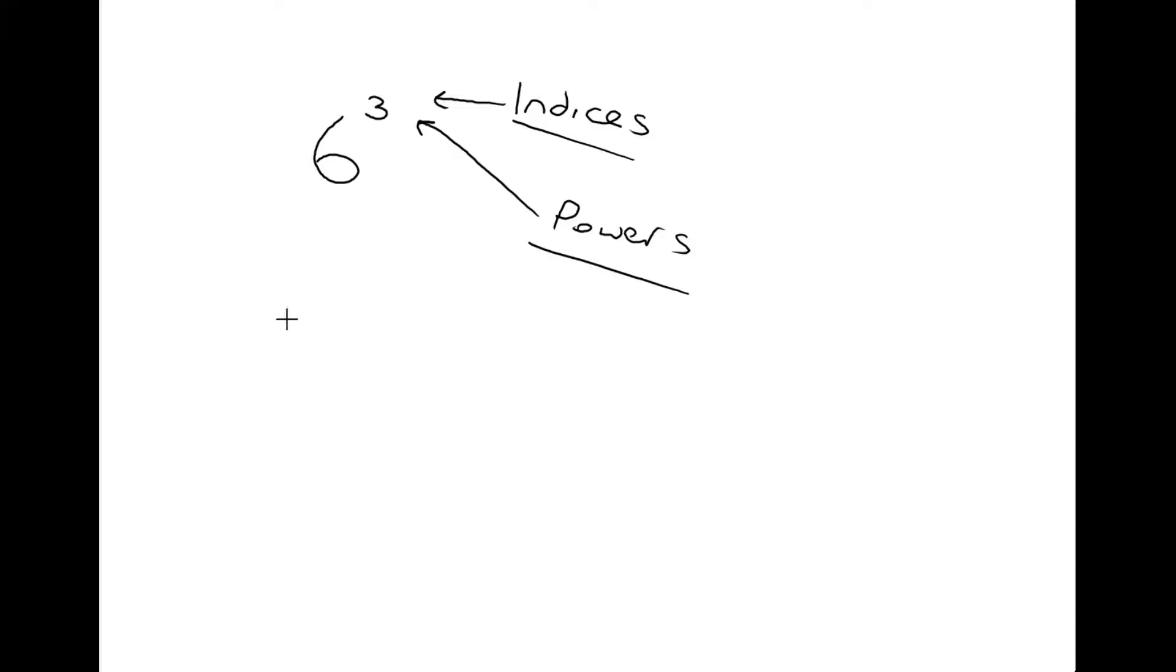What that three is telling us is that we take the six and we multiply it by itself one, two, three times. So six to the power of three is six times six times six.